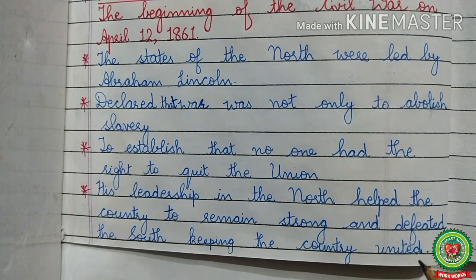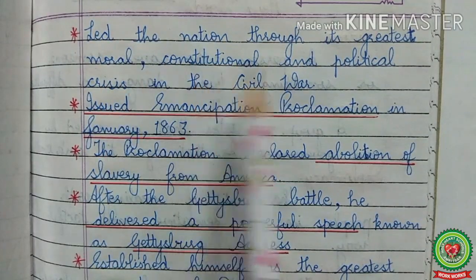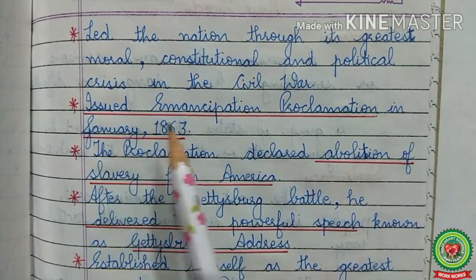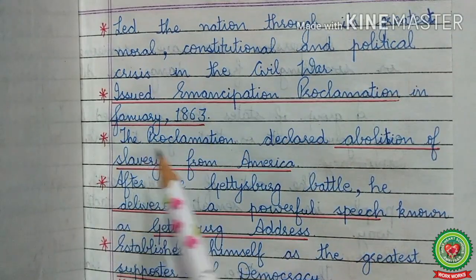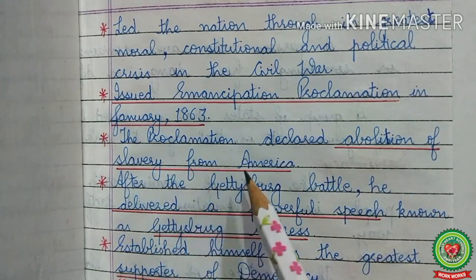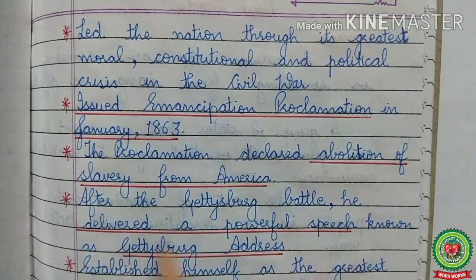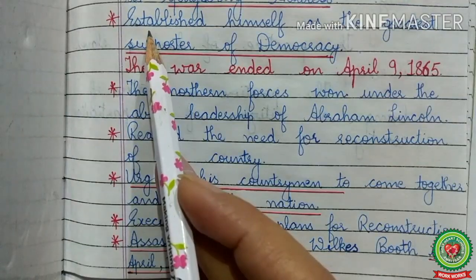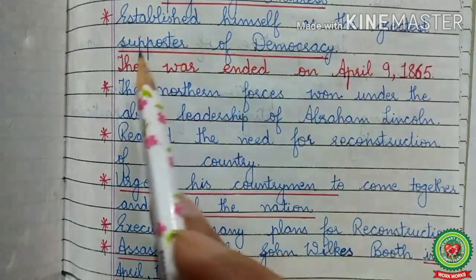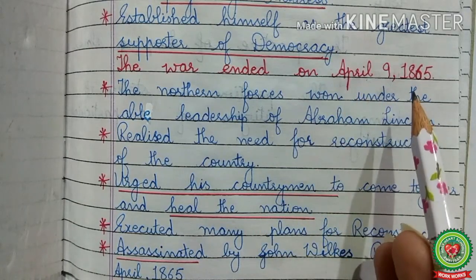His leadership in the North helped the country remain strong and defeat the South, keeping the country united. He led the nation through its greatest moral, constitutional, and political crisis in the Civil War. He issued the Emancipation Proclamation in January 1863, which declared the abolition of slavery from America. After the Battle of Gettysburg, he delivered a powerful speech known as the Gettysburg Address, establishing himself as the greatest supporter of democracy.